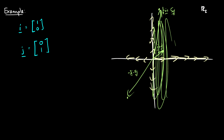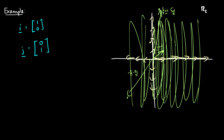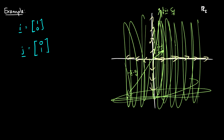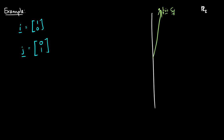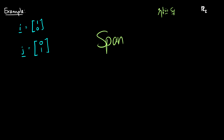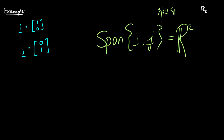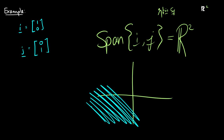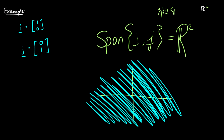We can get all of these spots going in both directions. Essentially, the span of vectors i and j is the whole plane — all of R2. We can get every single spot in this whole plane with just these two vectors. So we say that the vectors i and j span all of R2; it spans the whole two-dimensional plane.